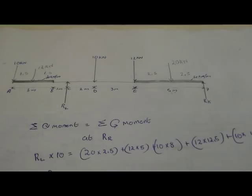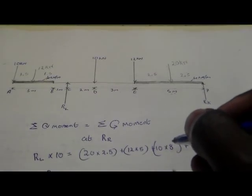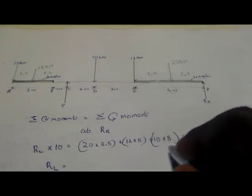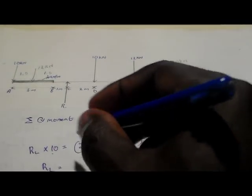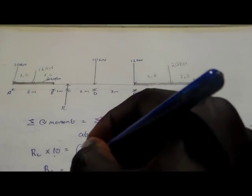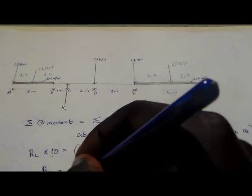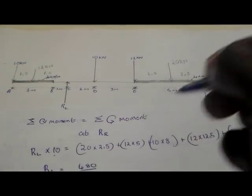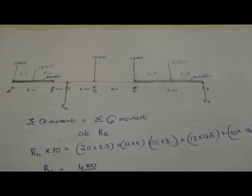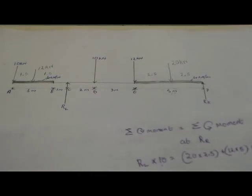Simplifying for RL: RL times 10 equals 480, so dividing both sides by 10 gives RL equal to 48 kilonewtons. Now we need to calculate RR, so we take moment about RL.